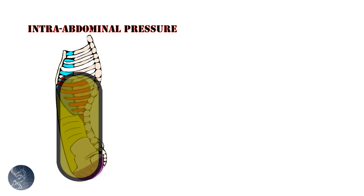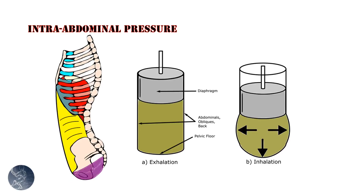Using this cylinder model, we can see how the diaphragm would act like a piston pressing down in the cylinder and increasing pressure. If the abdominals and pelvic floor are relaxed, the diaphragm is allowed to fully descend.